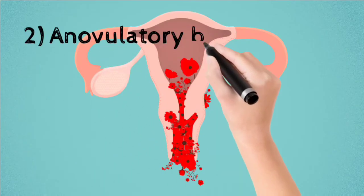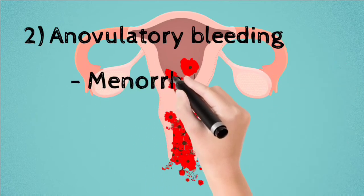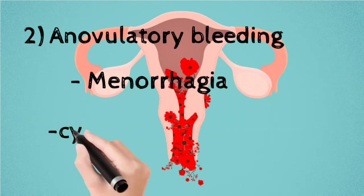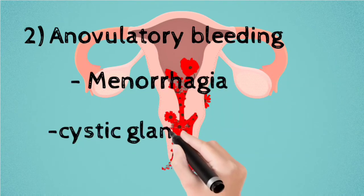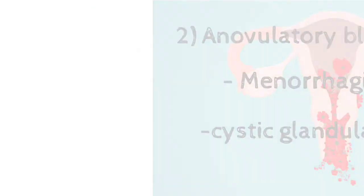In anovulatory bleeding, two conditions are seen: menorrhagia and cystic glandular hyperplasia.